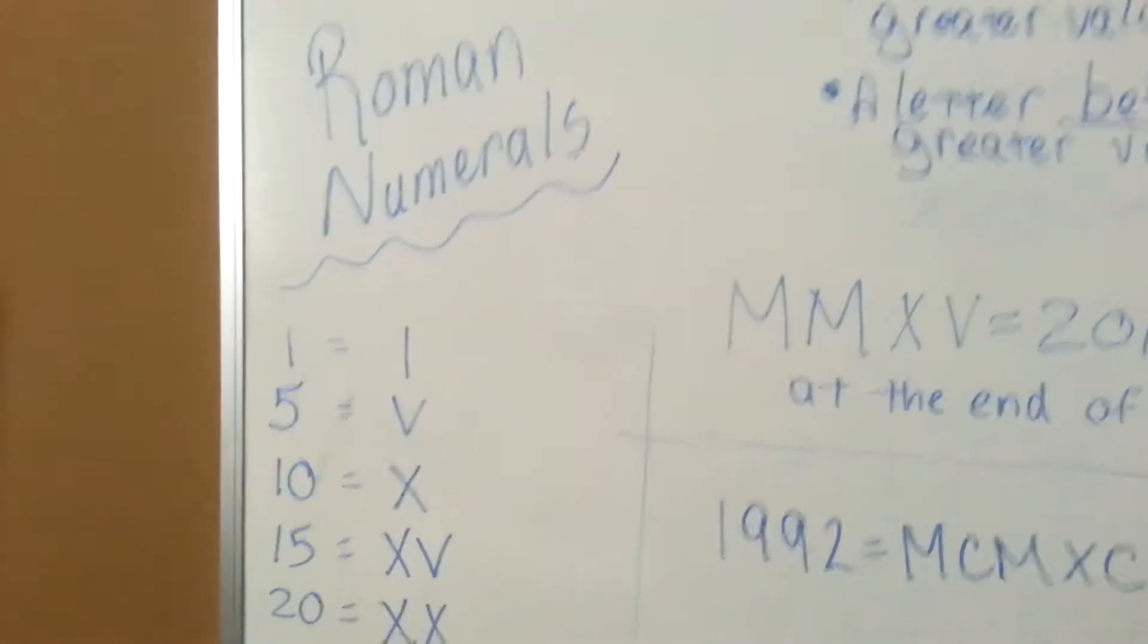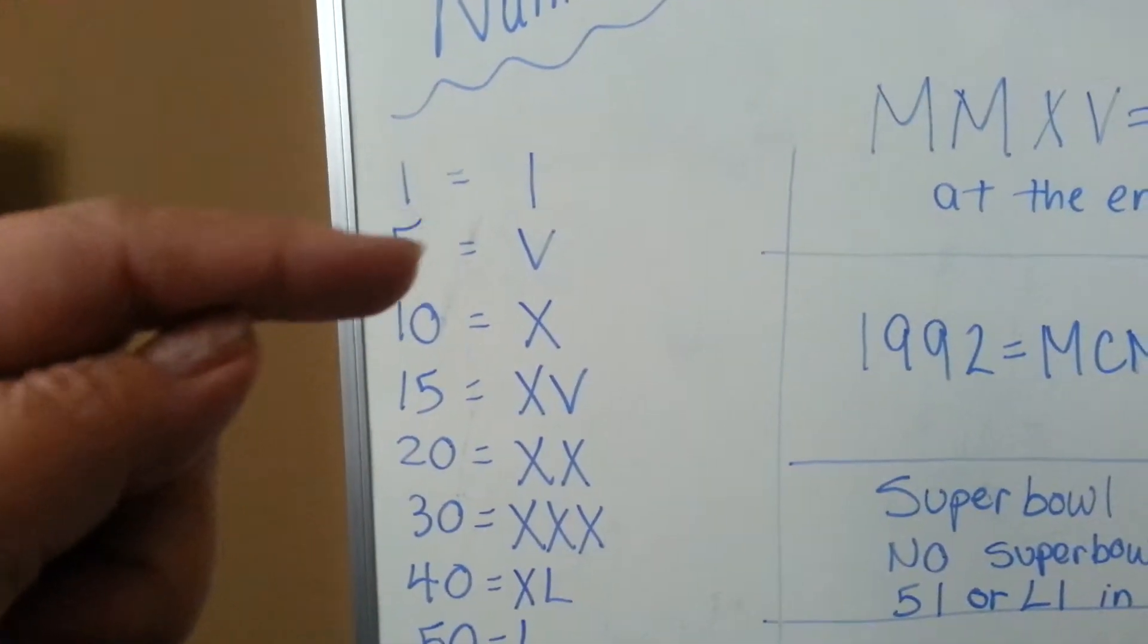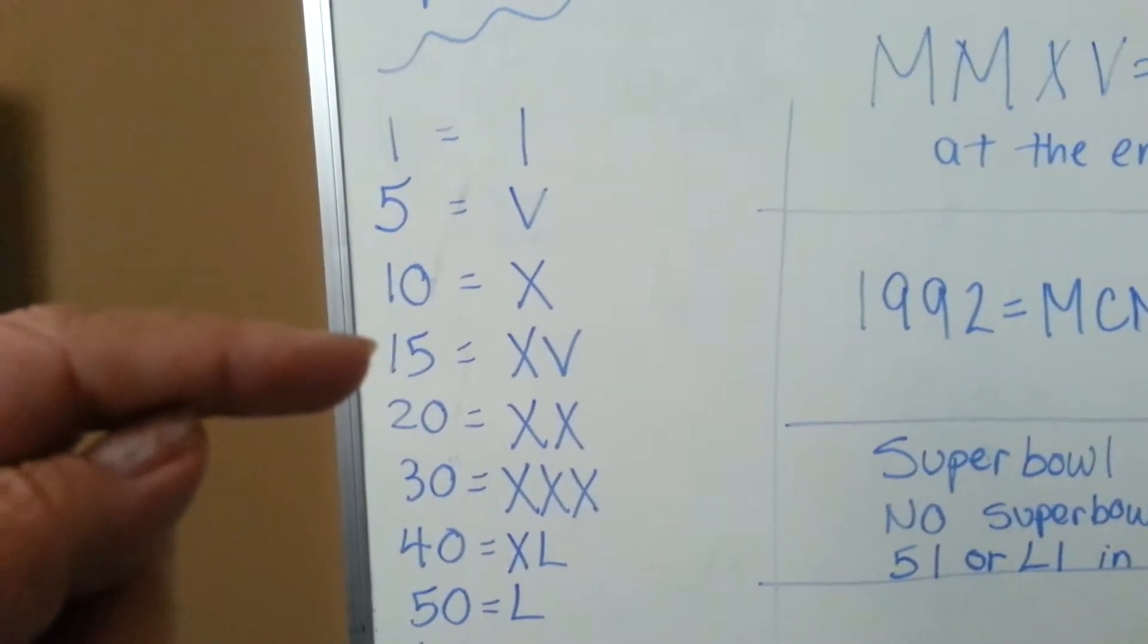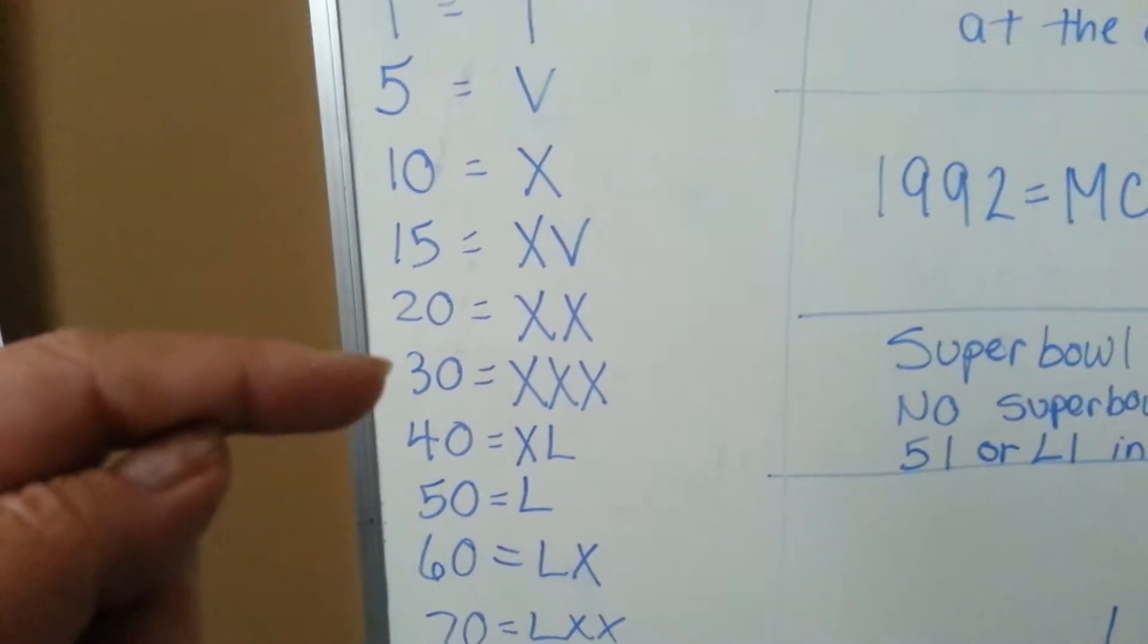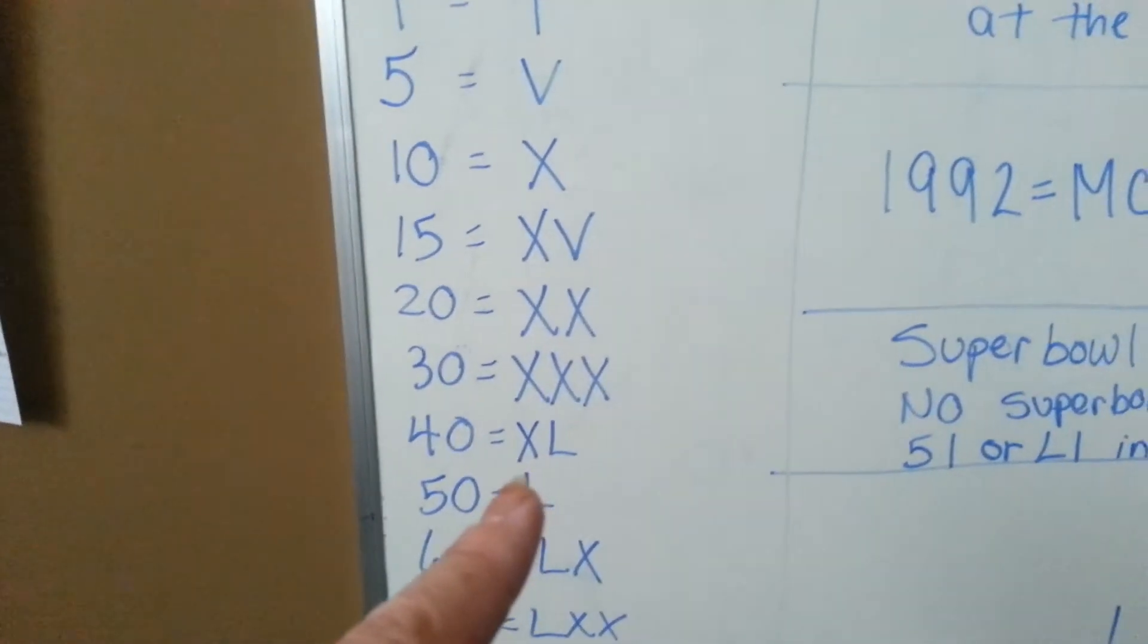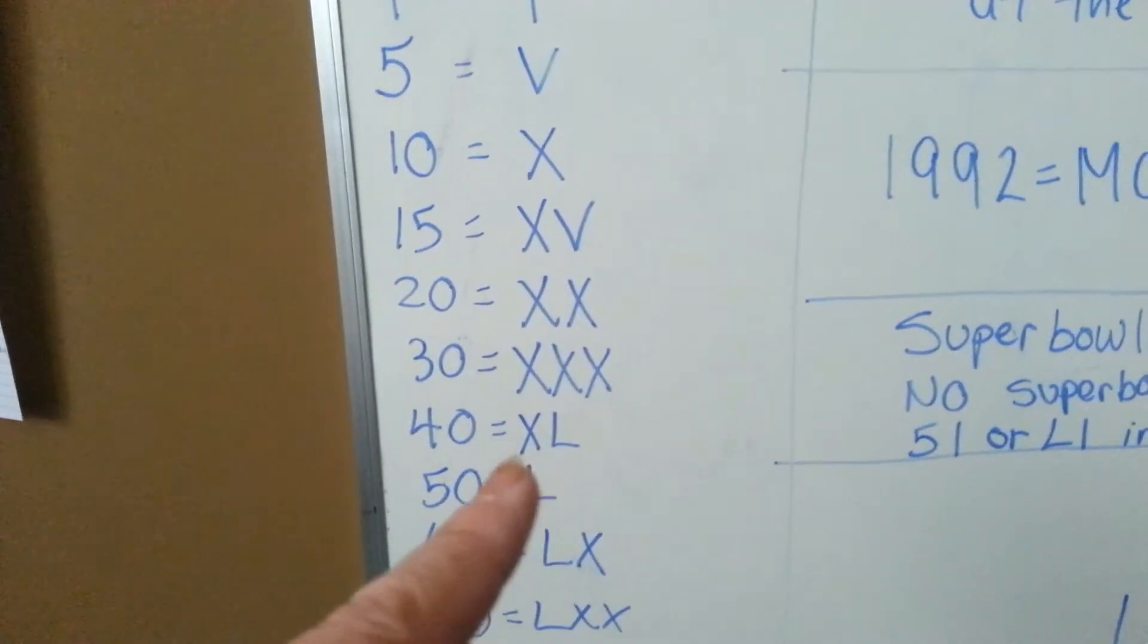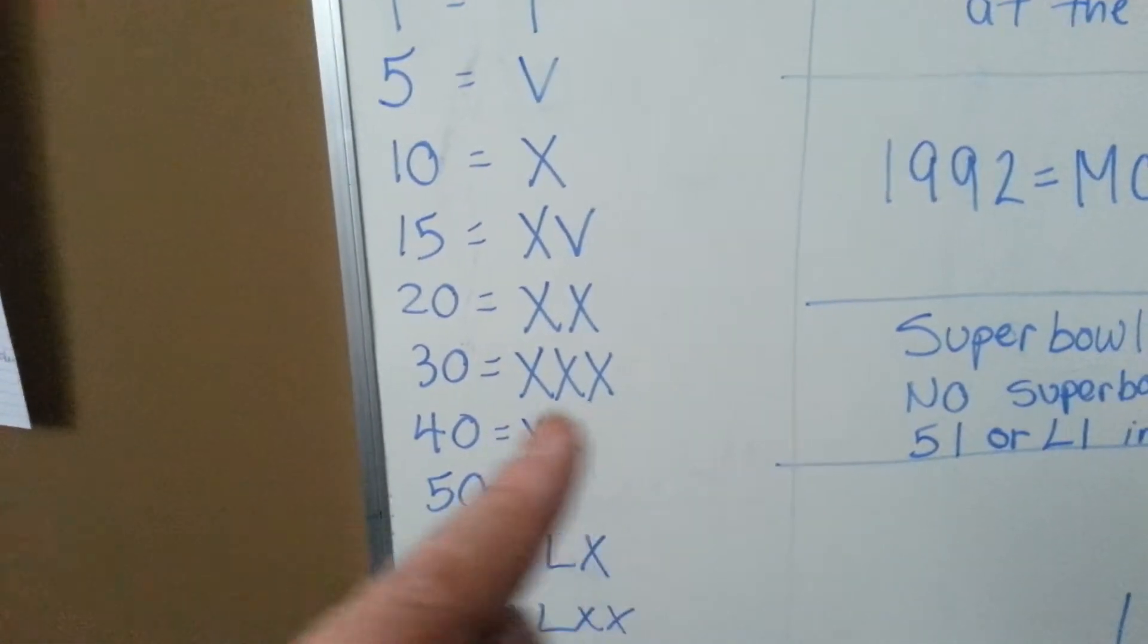So here are the basic numbers. That's a 1, V is 5, X is 10, XV would be 15, XX would be 20, 3 X's would be 30, and because 50 is an L, you put the X before the L to make 40. You would not put 4 X's. 3 is the limit.